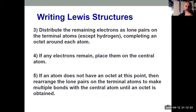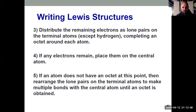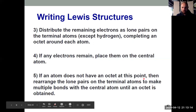Rule three: distribute remaining electrons as lone pairs on the terminal atoms to fill the octet for everything on the outside, ignoring the central atom for now. Rule four: if any electrons remain after that, put them on the center atom. After step four, all electrons should be used up — whether you started with 10, 18, or 32. Rule five: check octets. If any atom doesn't have an octet, move lone pairs from terminal atoms to create double or triple bonds so everyone has an octet at the end, except hydrogen.